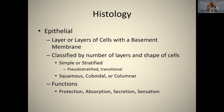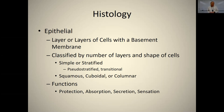Pseudostratified epithelium is found lining your lung passageways. Transitional epithelium is unusual: when relaxed, it's stratified; when stretched, it's simple. It's found in only a few places — the urinary bladder and the ureters, which bring urine from the kidneys to the bladder. An empty bladder has stratified epithelium; a full bladder has simple.